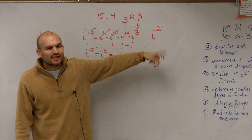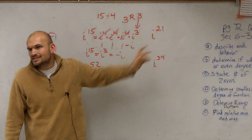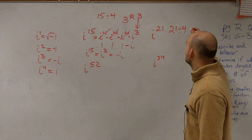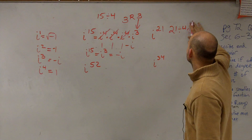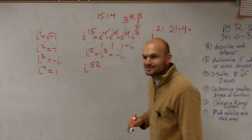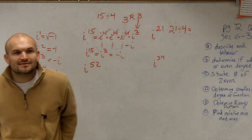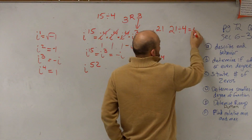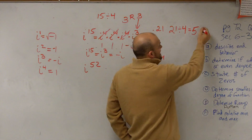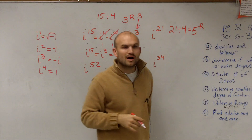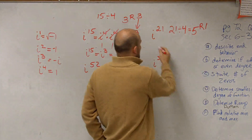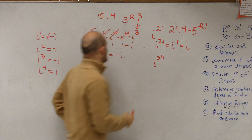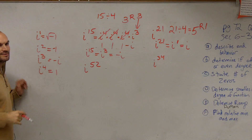Let's do i to the 21st. 21 divided by 4 is 5 with a remainder of 1. Therefore, i to the 21st is the same thing as i to the first, which equals i. i to the first power is equal to i.